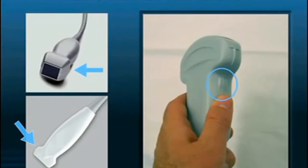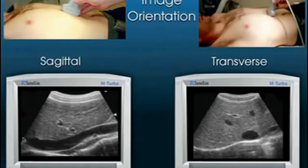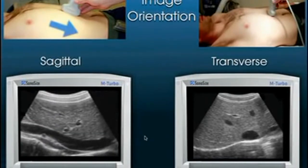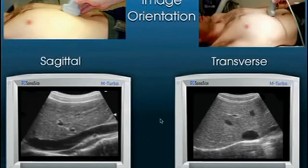Each transducer has an indicator, and the indicator follows a standard convention: towards the patient's head in a sagittal view, and towards the patient's right in a transverse view. Looking at the inferior vena cava in a sagittal view, the indicator towards the head means the top of the screen is towards the head and the bottom towards the feet. If you accidentally aim the indicator towards the feet, the IVC appears upside down — still interpretable, but against the convention in the United States.